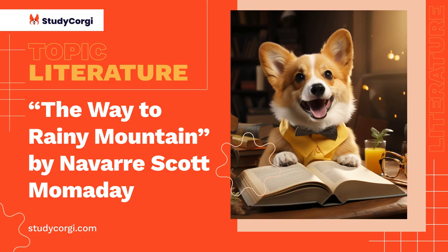In that way, The Way to Rainy Mountain by Momaday is a somewhat autobiographical story where the author assumed the role of a tribal storyteller sharing the legends of his people in order to communicate the uniqueness of their lands, the special vision the people had of the lands, and the tight connection between the Kiowa and their lands. Landscapes and nature serve as some of the main elements — even characters — in the stories told by the author, thus showing the significance of these elements to the Kiowa culture and identity.